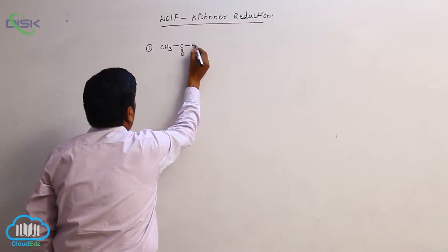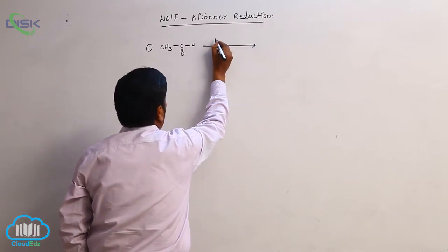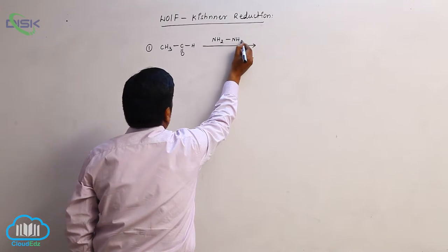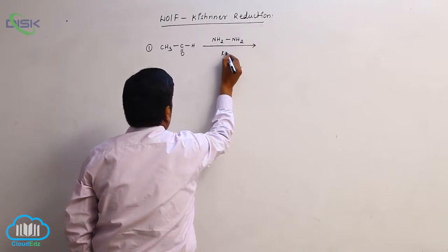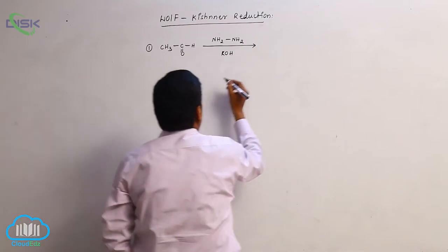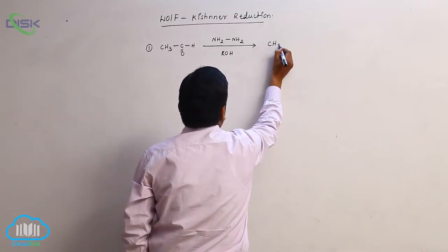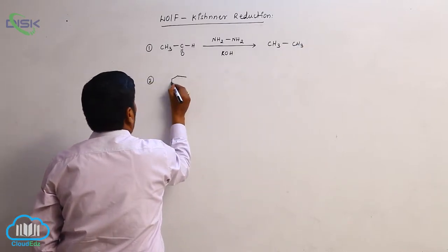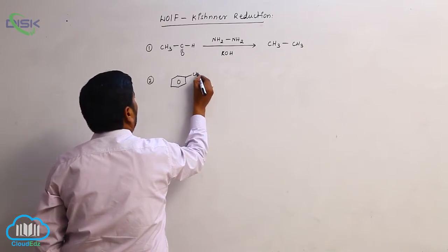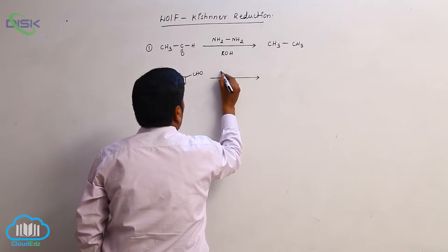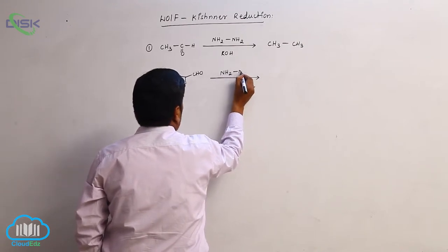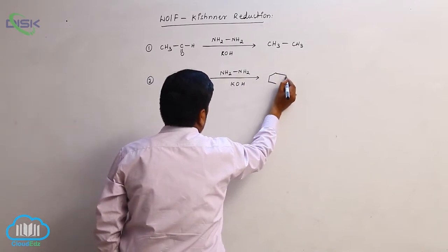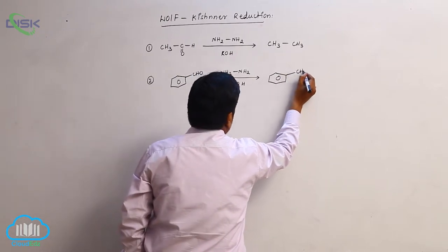Acetaldehyde reduced by Clemmensen reduction and by Wolff-Kishner reduction using hydrazine in the presence of a base, potassium hydroxide, to form ethane. The second example: benzaldehyde reacts with hydrazine in the presence of KOH to form toluene or methylbenzene.